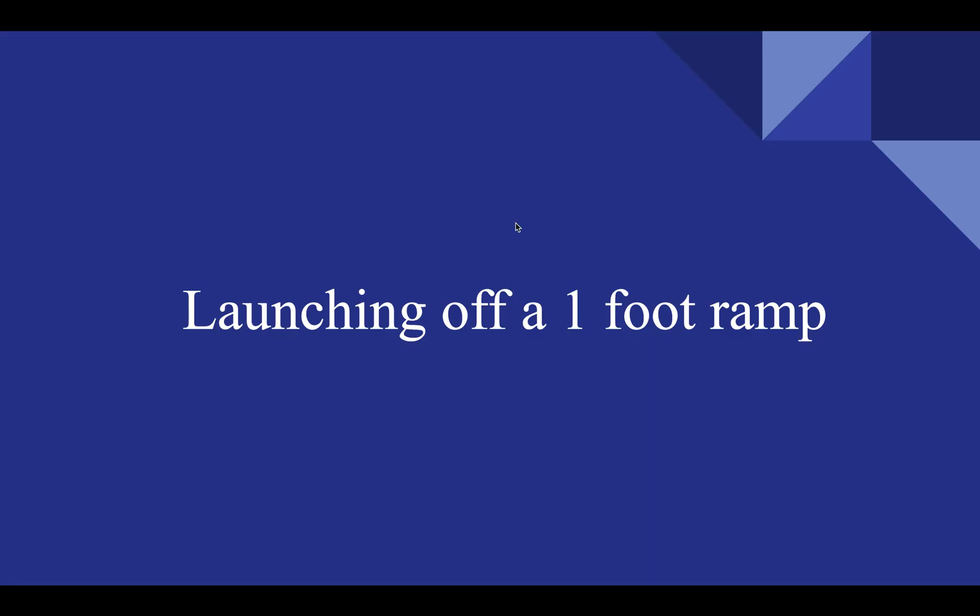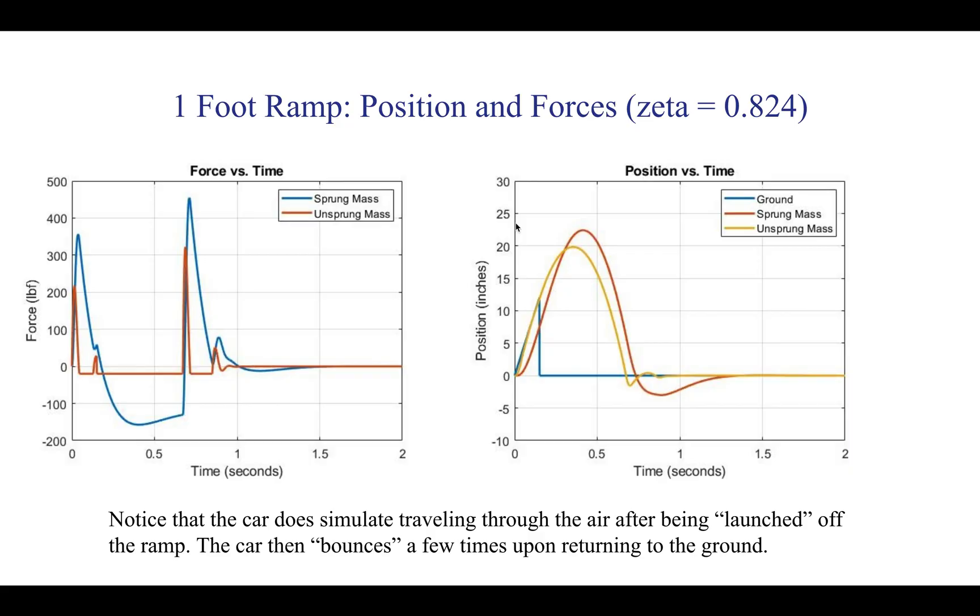Next we took a look at launching off of a one foot ramp. The figure on the right, once again you can see the position of the ground is that inclined ramp that sort of falls off and goes back to zero. You can see the position of the car, the unsprung mass and the sprung mass. The vehicle is allowed to leave the ground now and you can see how it's traveling in the air, hitting a peak and then falling back down. Position actually goes below zero because the suspension relative to its initial position is compressing and going into the ground as it lands. You can see that with the force graph on the left. When this car is hitting the ground again it's going to absorb some compression.